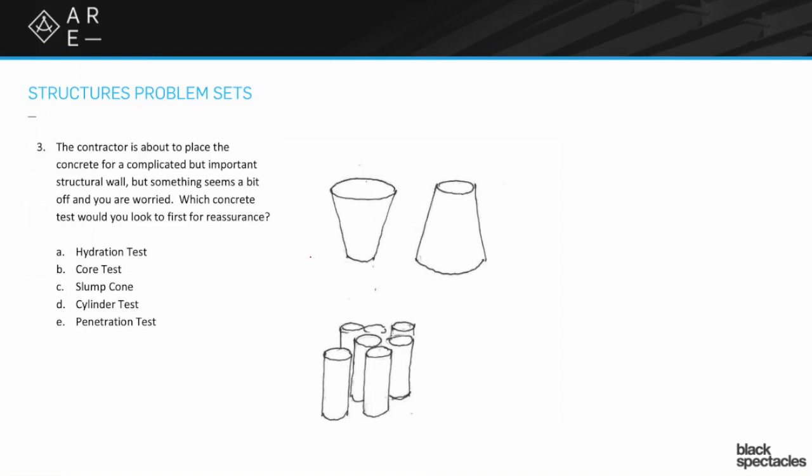So the key thing here when you're reading this question is that time seems of the essence, that something's wrong and before things get too set in place, are things going reasonably correct? So a couple things we can do right off the bat is we can get rid of a few of these choices. So one that we can get rid of is A, because hydration test, I just made up. So that's not a real thing.